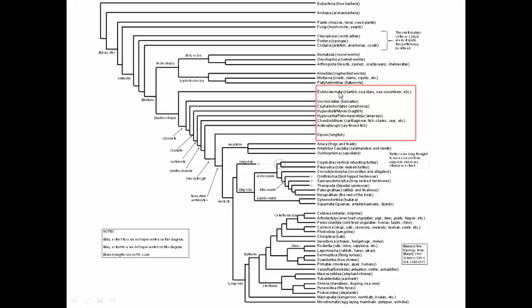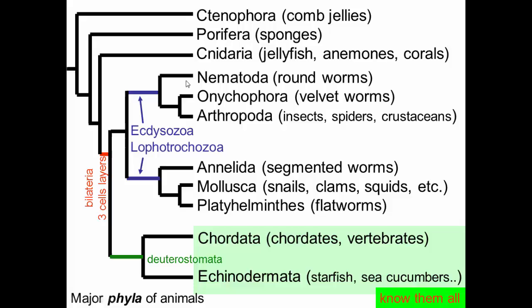To continue our tour of our phylogenic tree, we'll now be looking at the deuterostomes — the echinoderms and some of the basal chordates. Going back to this tree for our animal phyla, we've looked at the protostomes, now we'll look at the deuterostomes.